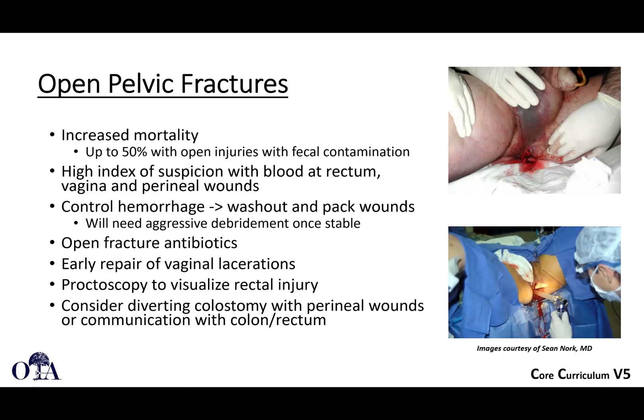Open pelvic fractures historically have had up to 50% mortality. Initially, patients can have significant hemorrhage; later, they can die from sepsis. They bleed more because the tamponade effect of a closed pelvis is lost. If there is any blood from the rectum, vagina, or perineal wounds, management includes irrigation, wound packing, aggressive debridement, antibiotics, early repair of vaginal lacerations, proctoscopy for rectal injury, and potentially a diverting colostomy to prevent fecal contamination of the pelvis.